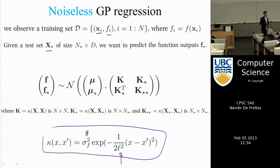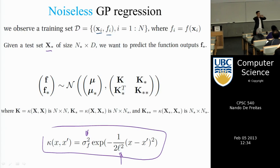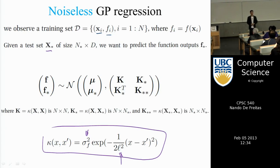For example, that function could be someone's preference for different countries in the world. I could ask questions like: do you prefer Brazil to Canada? Do you prefer the UK to France? Do you prefer Korea to Japan? By asking these questions, I can learn a GP that describes their preferences. A GP in this case would be a 3D object over the globe, and you could map it like a 2D map to give preferences over countries in the world.